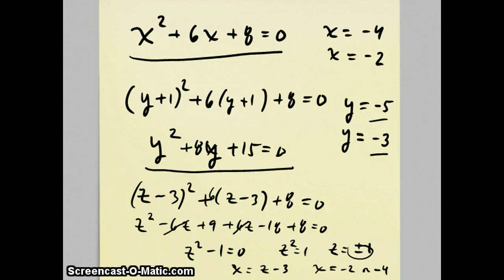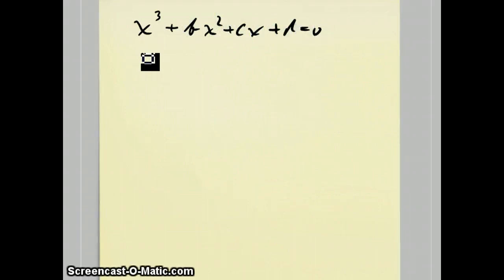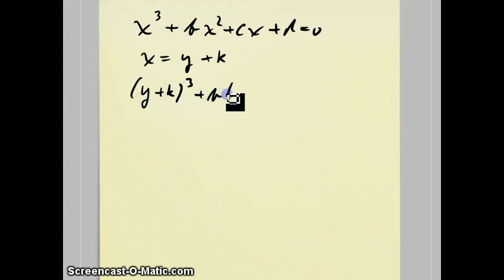This is the basic idea: you turn an equation into a related equation, and if that related equation is easier to solve, it helps you solve your original equation. Now let me show you how this applies to cubic equations. Imagine a general cubic equation — I'll leave off the leading coefficient since you can always divide through by it, so assume the x cubed coefficient is 1. I want to replace x with y plus k and find the ideal value of k that makes the quadratic term get eliminated.